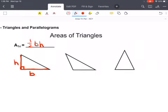In an obtuse triangle, we are given the base, but the height is actually drawn outside of the triangle, because it has to be where they meet at a right angle.